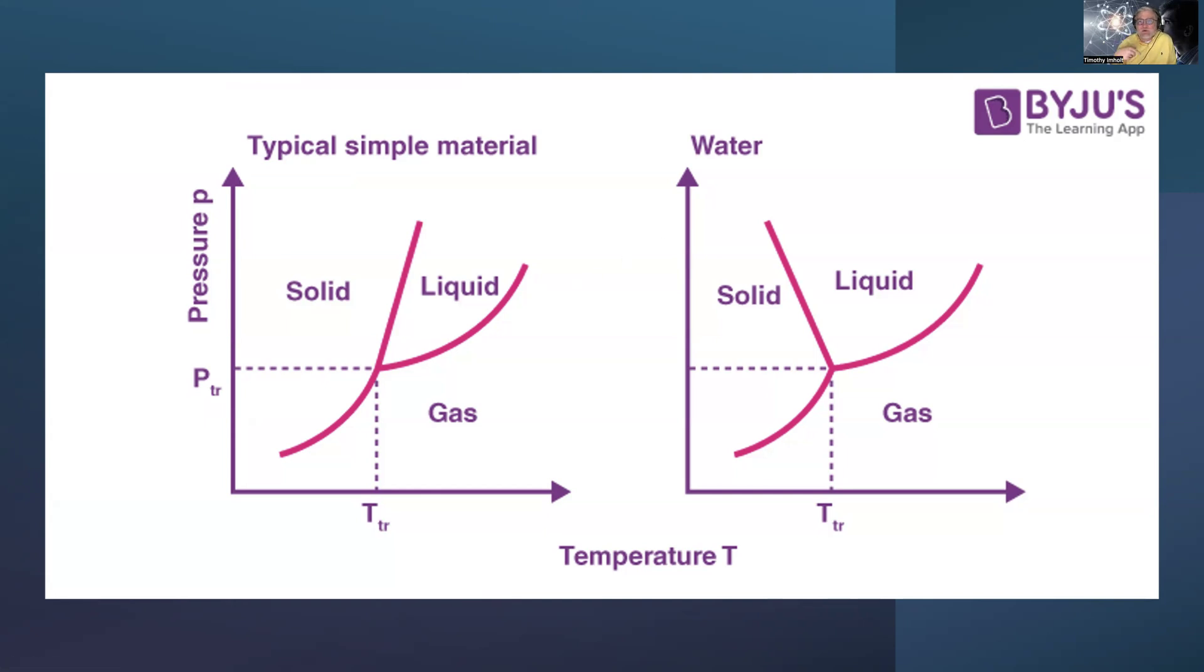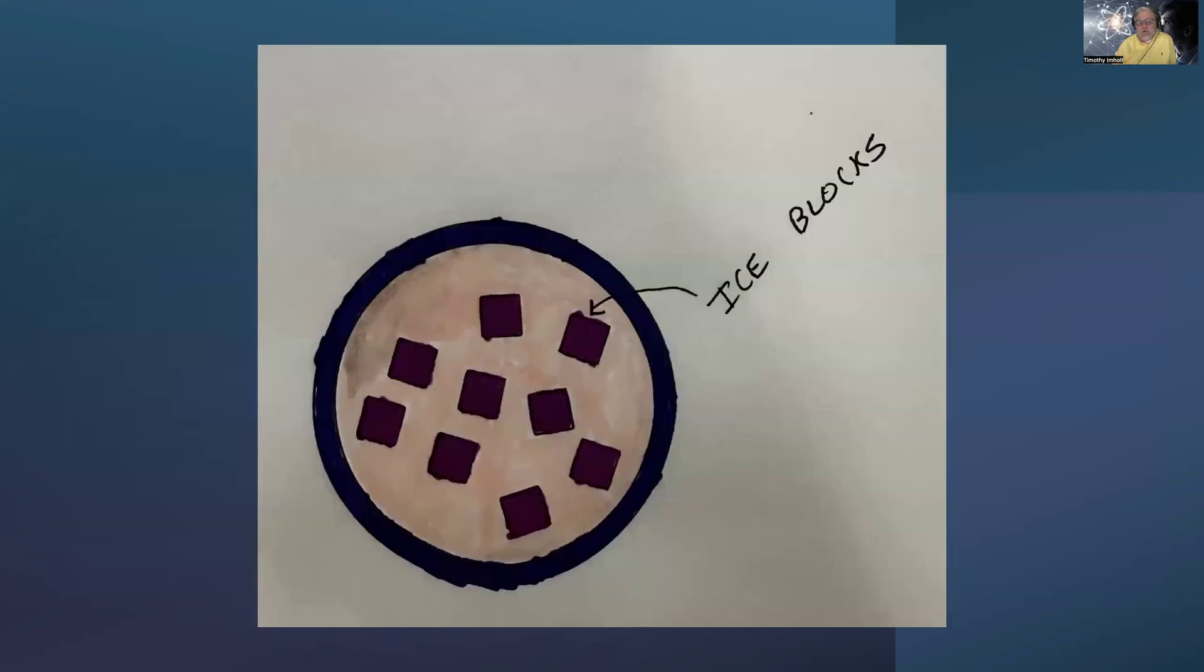But that doesn't really answer the entire question, right? The question is what happens if you can't really have that contraction. So excuse my simple art here for a second. What you'll find is that if that blue part is the actual container, the indestructible container, and you start to drop it below zero degrees Celsius, you're going to get ice blocks.